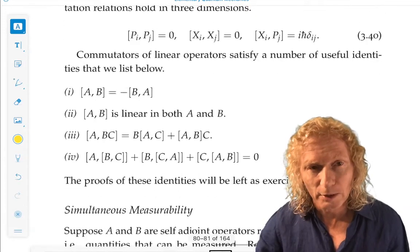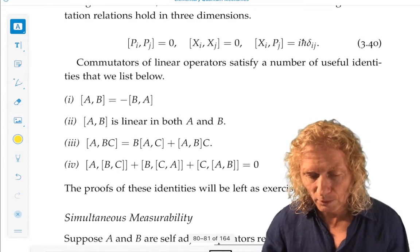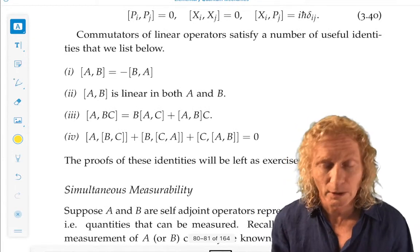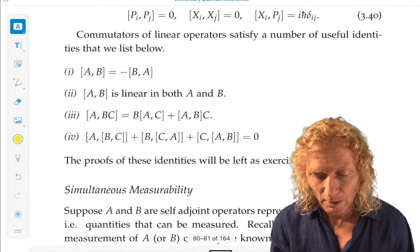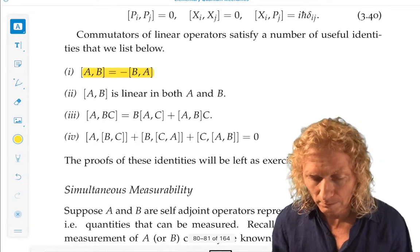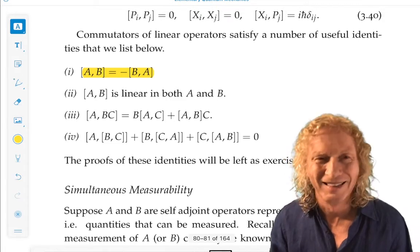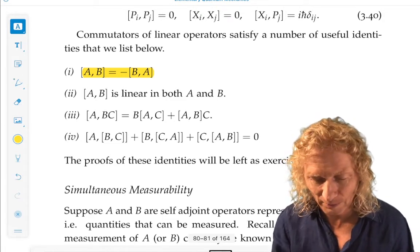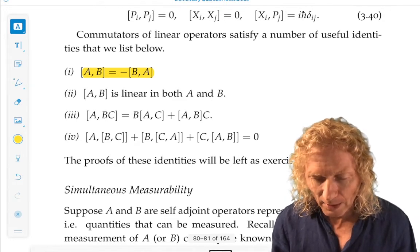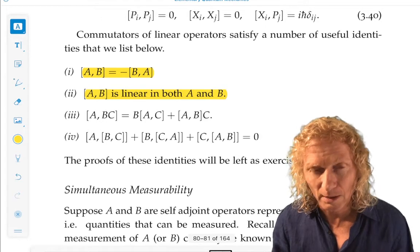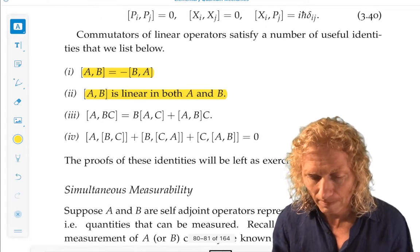The commutator satisfies certain properties. And we're actually going to use them pretty heavily. The first one is obvious. The commutator of A and B equals minus the commutator of B and A. The commutator of A and B is linear in both A and B.